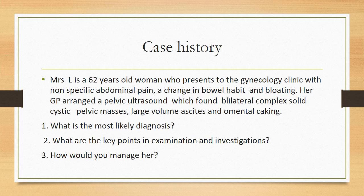Returning to the case history: the 62-year-old woman presents with non-specific abdominal pain, change in bowel habit, and bloating. Her GP arranged a pelvic ultrasound showing bilateral complex solid mass, large volume ascites, and omental caking. What is the most likely diagnosis? What are the key points to look for on examination? How would you investigate this patient — both for diagnostic purposes and preoperative workup? How would you treat this lady? Please answer all these questions and email them.